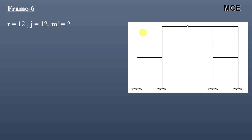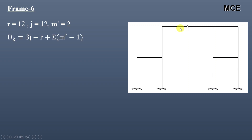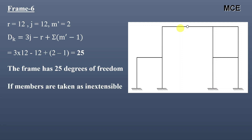For frame 6, this frame has 12 reactions, 12 joints, and 1 internal hinge. The number of members meeting at this internal hinge is 2, so m′ = 2. The value of DK is equal to 25, meaning this frame has 25 degrees of freedom. If members are taken as inextensible, this frame contains 12 members, so DK = 25 − 12 = 13.